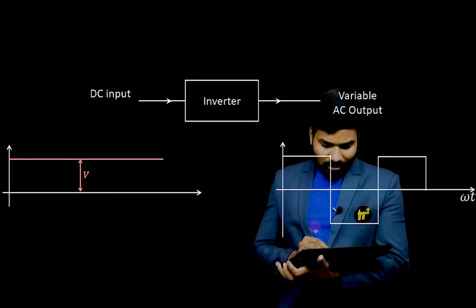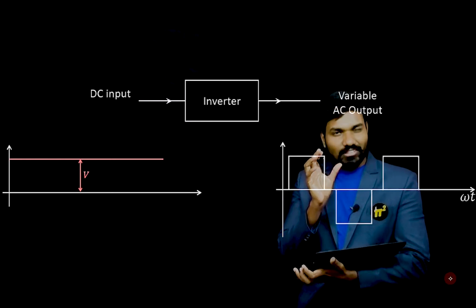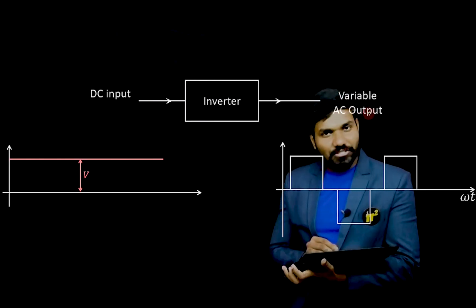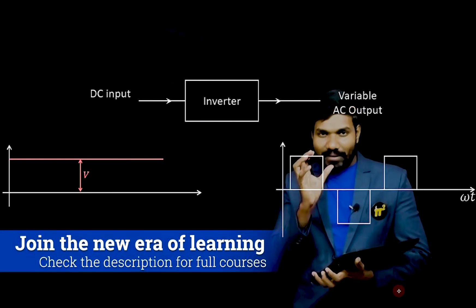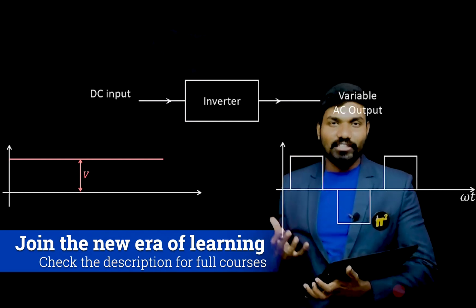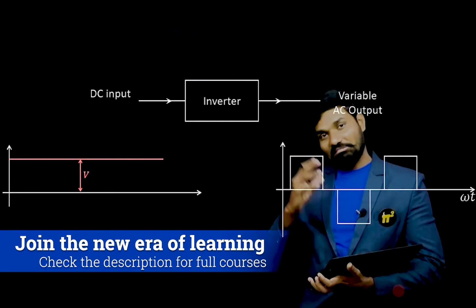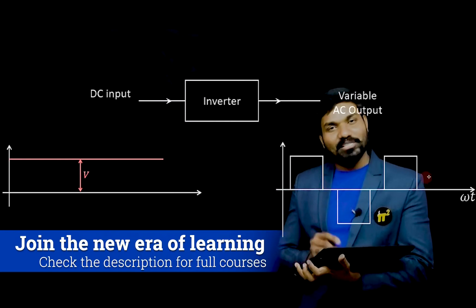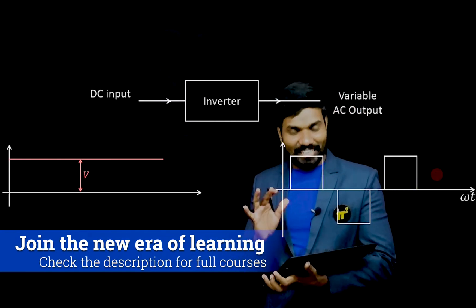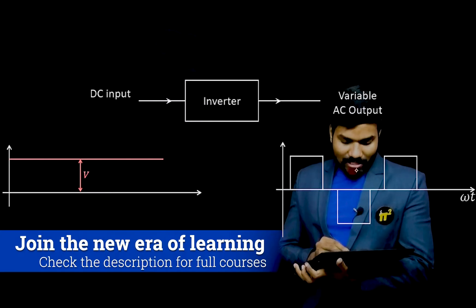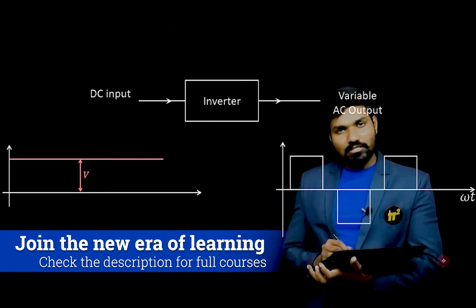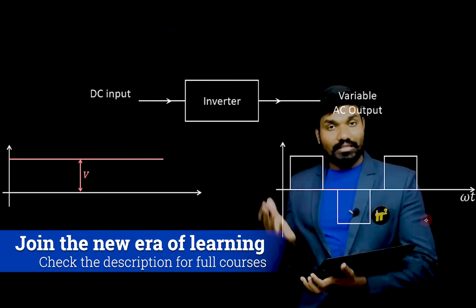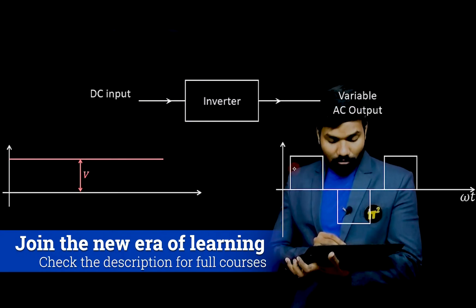To control the output voltage, what we do is change the width of the pulse. As the width of the pulse changes, the output voltage changes. This changing of the pulse width is called Pulse Width Modulation (PWM) — you are simply changing the width of the pulse, nothing beyond that. By changing the pulse width you get variable voltage, but this leads to increased harmonics and higher THD.